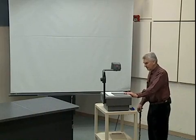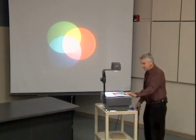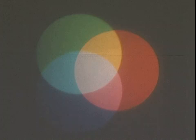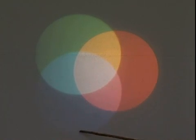Let me demonstrate that here. I'll show you what I have on the overhead — if we could turn the lights down, I'll turn on the overhead. I have a transparency, and here I have a disc that allows only green light to go through. Overlapping that, I have a disc that allows only red light to go through, and overlapping that I have a disc that allows only the blue light to go through.